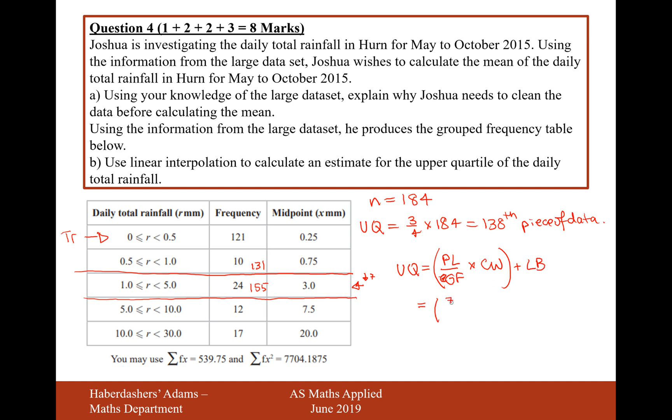So it's going to be, we're going to go seven out of 24 values into the group, and the group is four deep. And then we're going to add this onto the lower bound of the group, which is 1.0. So do this on the calculator, and we're going to get an answer of 2.17 millimeters of rain as the upper quartile. So we've gone seven out of 24 pieces of data into this group. This group is four wide, so that's why I've had to multiply it by four. And then obviously I'm starting from the point of one coming at 7/24ths into this group, so that's why I had to add 1.0 on the end. Helpful little formula for linear interpolation there. The answer is 2.17.